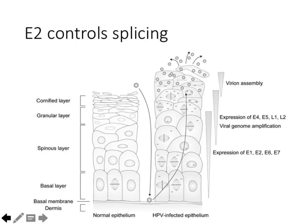Most of what we're going to talk about is what's happening in the early stages of infection. In these early stages, all that's happening is that the viral genome is being maintained — in other words, each time a cell divides, we get two daughter cells each with a copy of the genome.